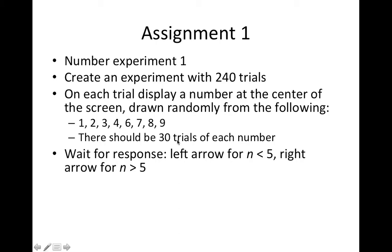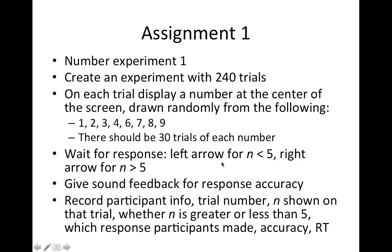After their response, you're going to erase the digit shown to them and give them sound feedback regarding whether their response was accurate or not. You will then write out into a data file participants' information such as their age and gender, the trial number of that trial, the digits shown on that particular trial, whether it's greater or less than 5, which response participants made, whether their response is accurate or not, and how long it has taken for them to make the response.